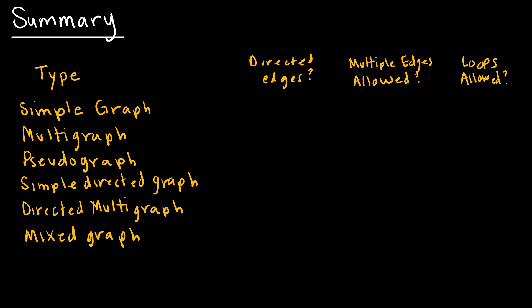So hopefully I can help you sort out some of this terminology to make sure that we're on the right track here. So I've got several types of graphs listed: simple graph, multigraph, pseudograph, simple directed graph, which we didn't talk about explicitly, directed multigraph, and a mixed graph. We're going to talk about what kind of properties these graphs will have. So we know a simple graph does not have directed edges. Can I have multiple edges on a simple graph? No, I cannot, because otherwise it would not be simple. And can I have loops? No, because the definition of a simple graph is essentially no multiple edges and no loops.